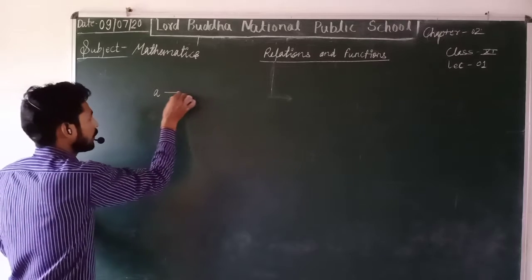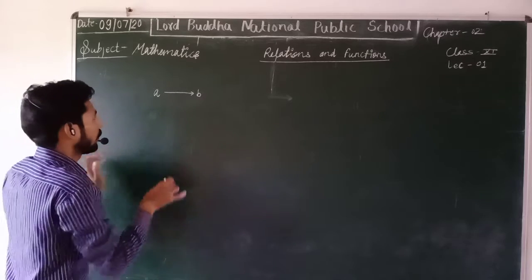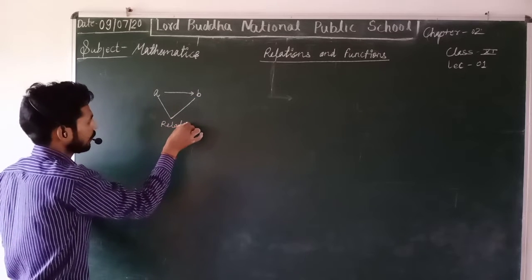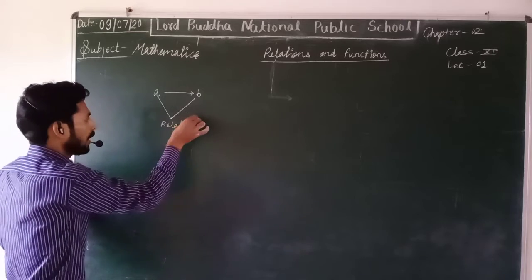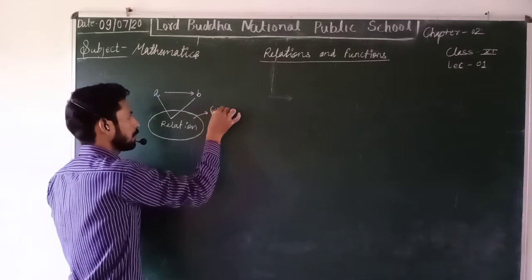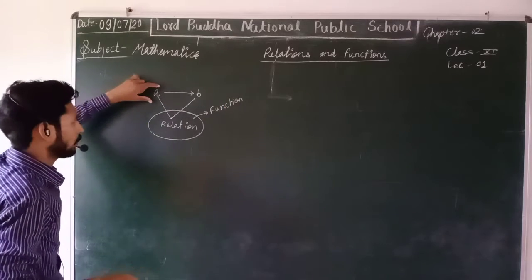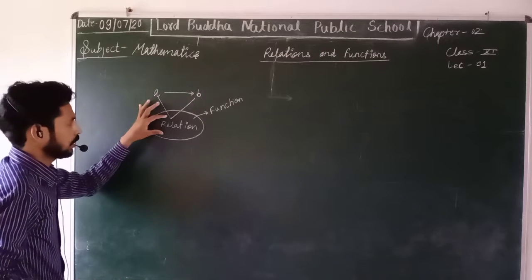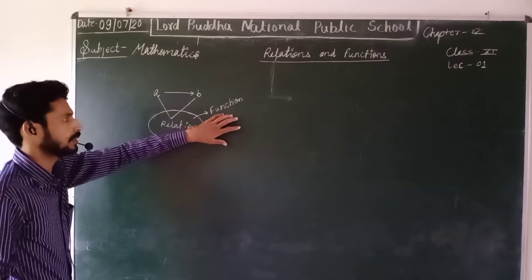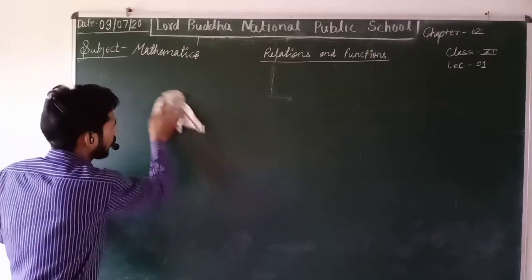Thing A depends on B — that means there is a relation between A and B. But which property of this relation makes it a function? The relation we define as a function can be of many types. So we are going to start this chapter.